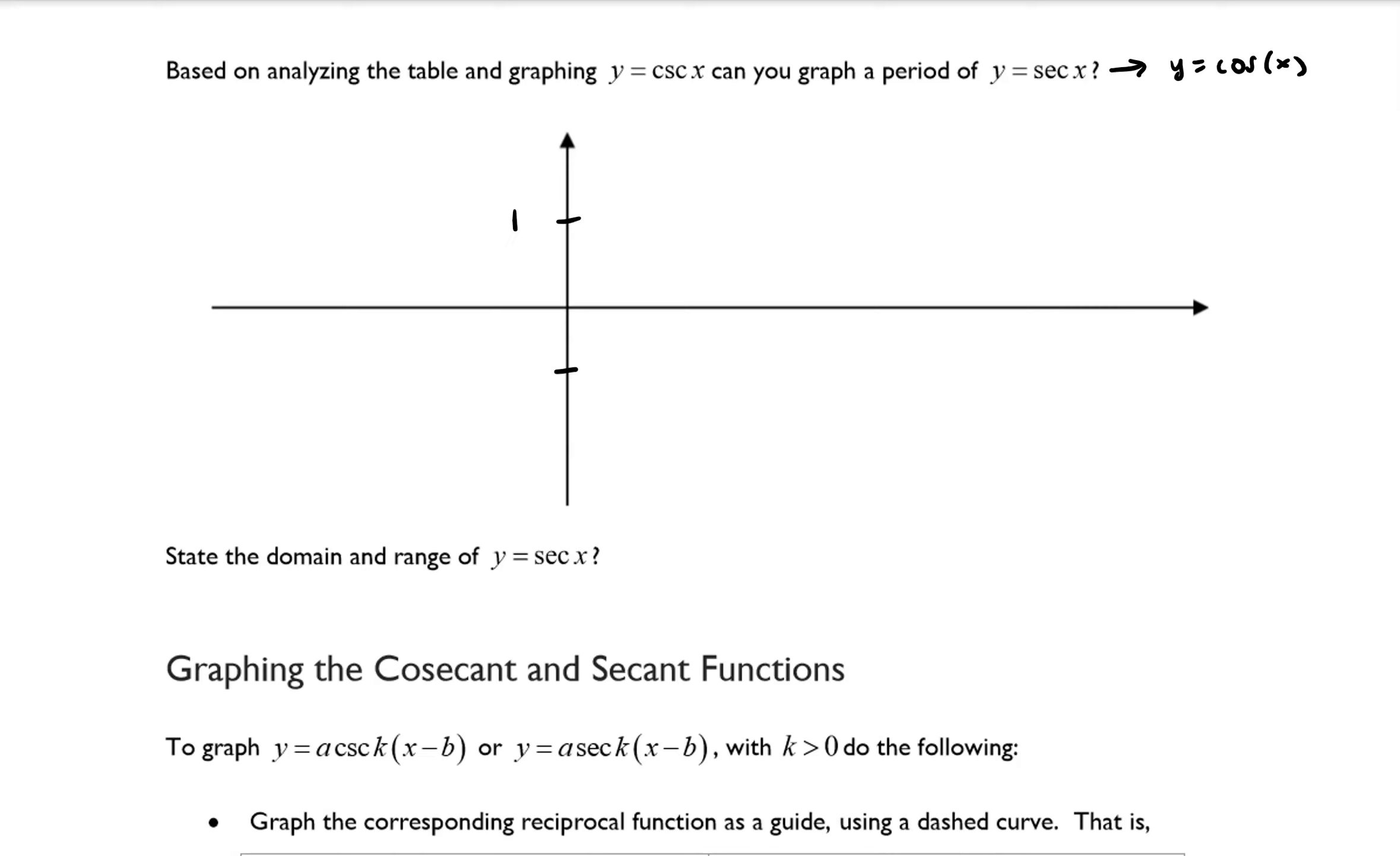And I know that our amplitude is 1, and so our range for our cosine function is between negative 1 and positive 1. I think that's a little bit high, so there we go. And we know that 1 period is equal to 2 pi.